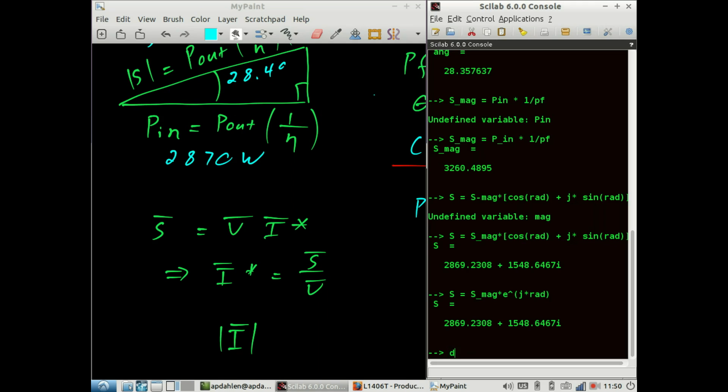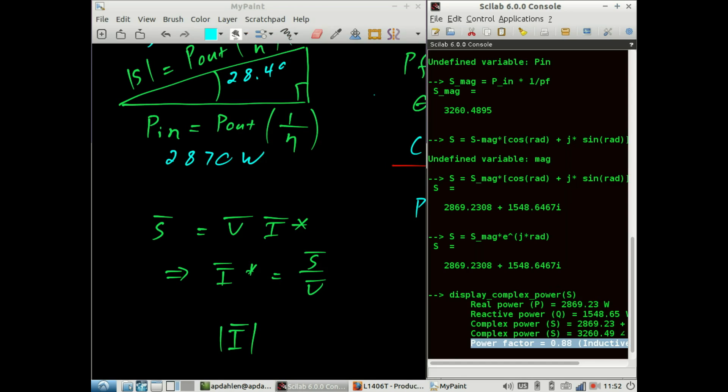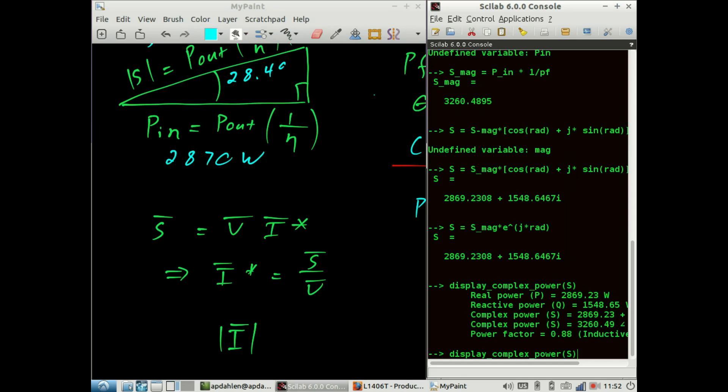Let's take a quick look at S. This helper function can be used as a quick sanity check for our numbers. So our power is given here as P. Our reactive power is given as Q. Here we have complex power as a phasor. And finally the power factor is very close to what we started out with. And it is indeed inductive.